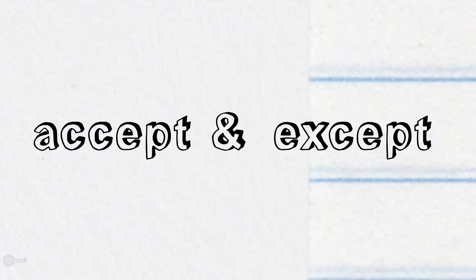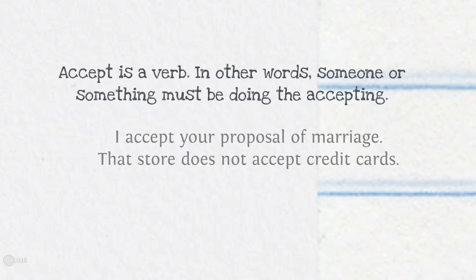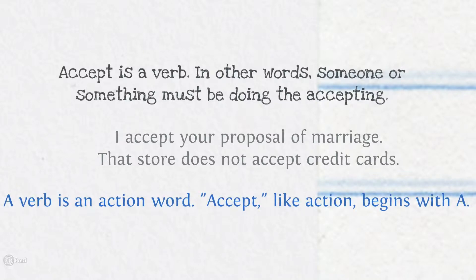Let's start with 'accept' and 'except.' Accept is a verb; in other words, someone or something must be doing the accepting. For example: 'I accept your proposal of marriage,' or 'That store does not accept credit cards.' Verb is an action word — accept, like action, begins with an A.